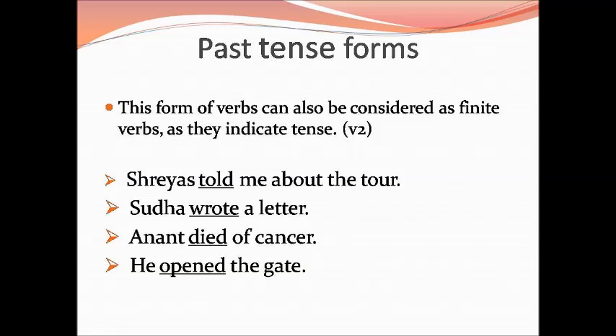For example: Rushreyesh told me about the tour. Sudha wrote a letter. Ananta died of cancer. He opened the gate. The verbs told, wrote, died, and opened indicate tense — they are in past tense forms. That is why these verbs are called finite verbs.